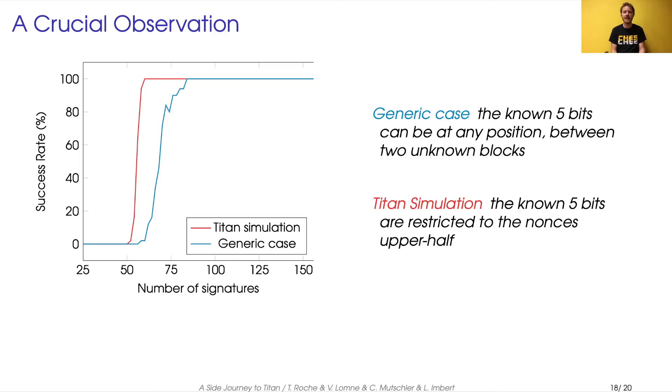And so we randomly chose five consecutive bits known inside simulation of nonces. And we put these five consecutive bits anywhere inside the nonces. And we observed that the success rate was actually lower than what we observed on Titan. In fact, the fact that the five consecutive known bits are located in the upper half of the nonce helped the attack. And this is quite unexpected.